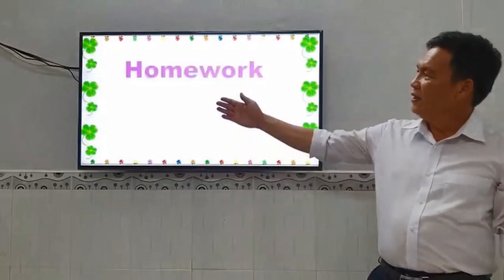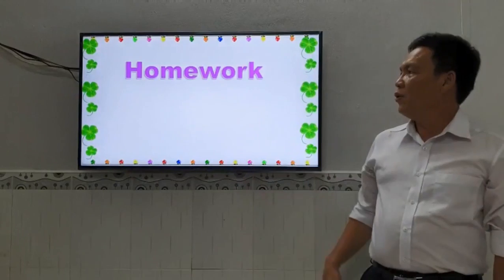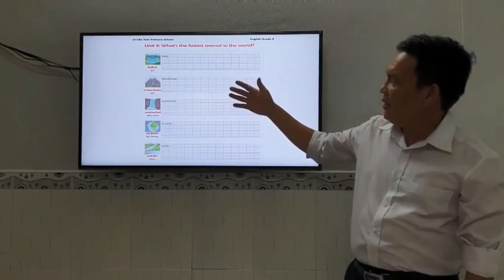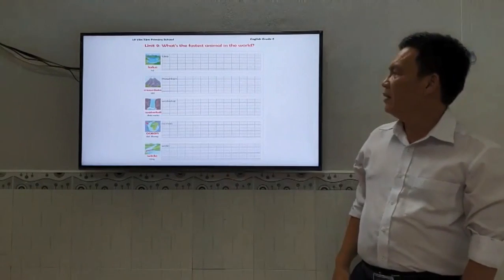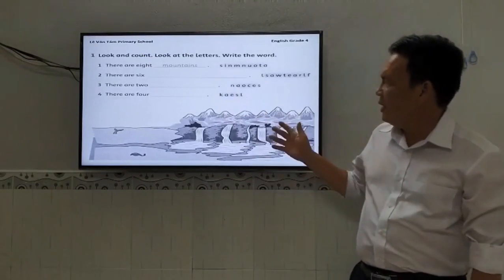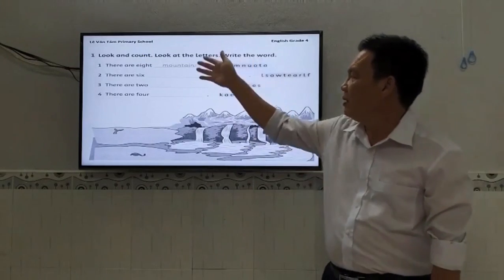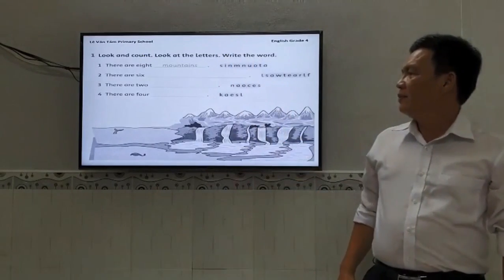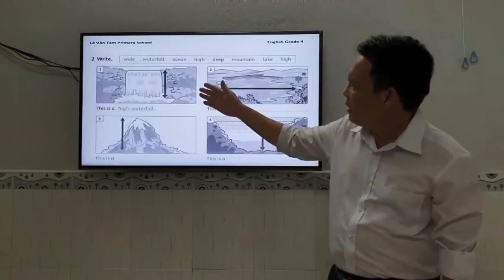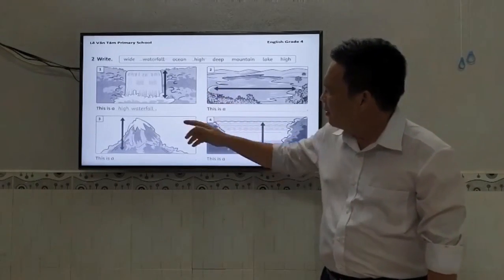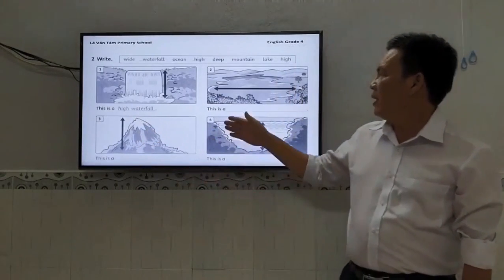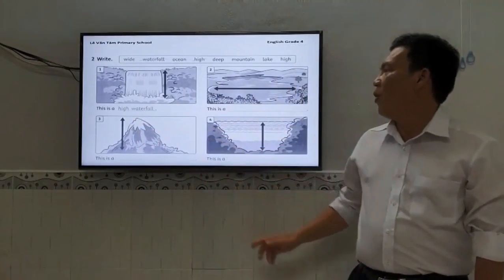Okay, remember, finish homework at home. Practice writing the words. Look at the picture carefully, then read and order the words. Now complete the sentences. For example number one: it is a high waterfall. Consider number two, three, and four.